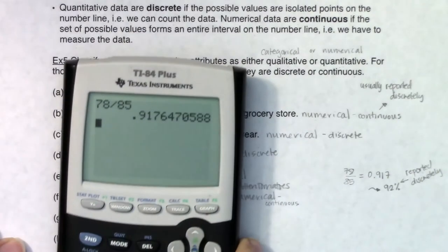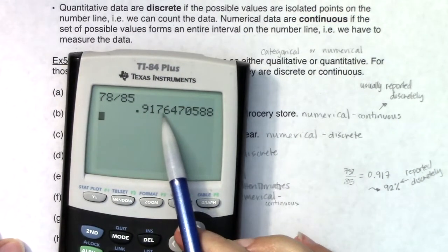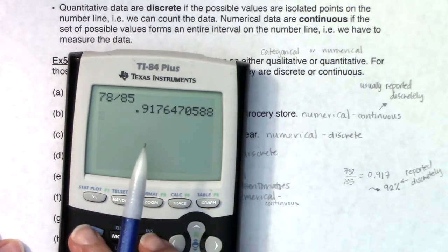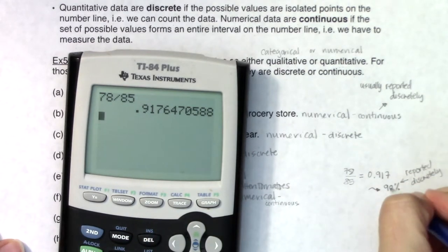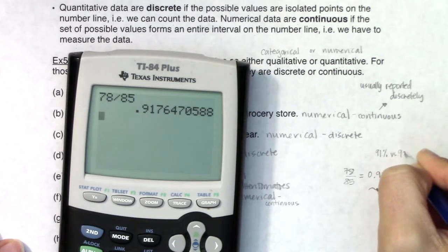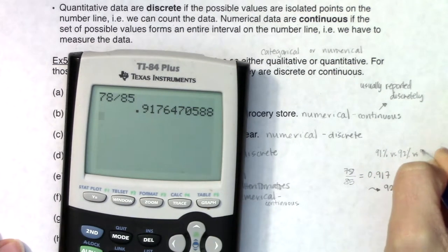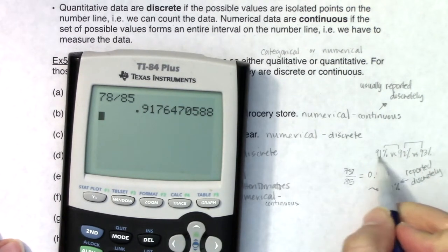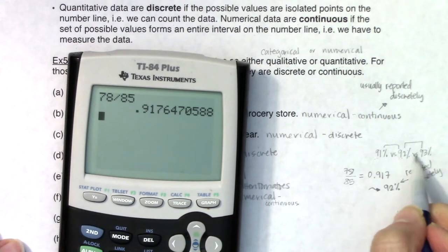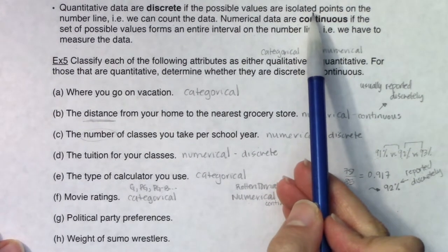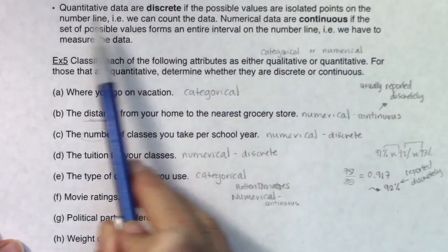But it's reported discretely, because rotten tomatoes isn't going to say it's 91.76470588. It's just going to round it to 92 percent and call it a day. When you round it, you offer space between those options. You could be 91 percent rotten, 92 percent rotten, 93 percent rotten. There is space between these options. There's a whole percentage that's a space in between.